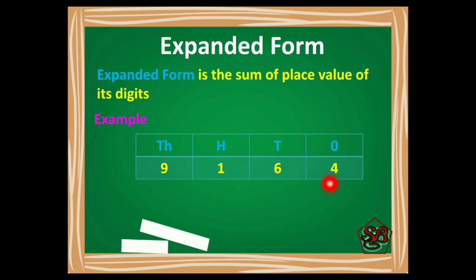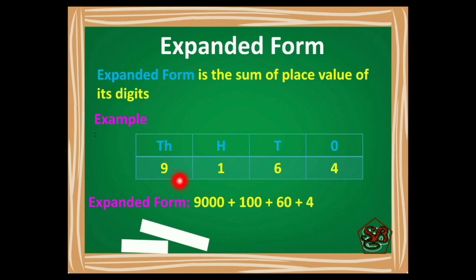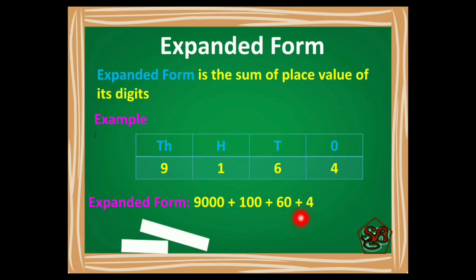First we will mark its places: ones, tens, hundreds and thousands. Now when we write it in expanded form, 9 is followed by 3 zeros as it is at the thousands place. So 9000, plus 1 followed by 2 zeros as it is at the hundreds place, plus 6 followed by a zero as it is at the tens place, plus 4 as it is at the ones place. So the expanded form of 9164 is 9000 plus 100 plus 60 plus 4.